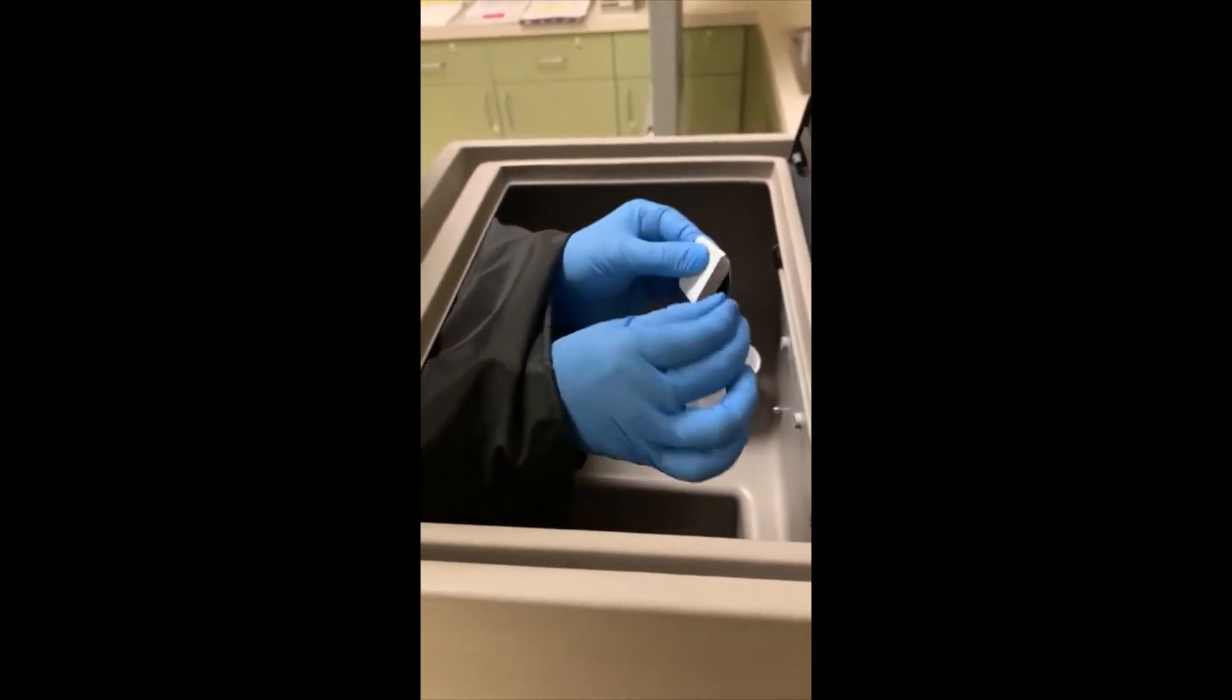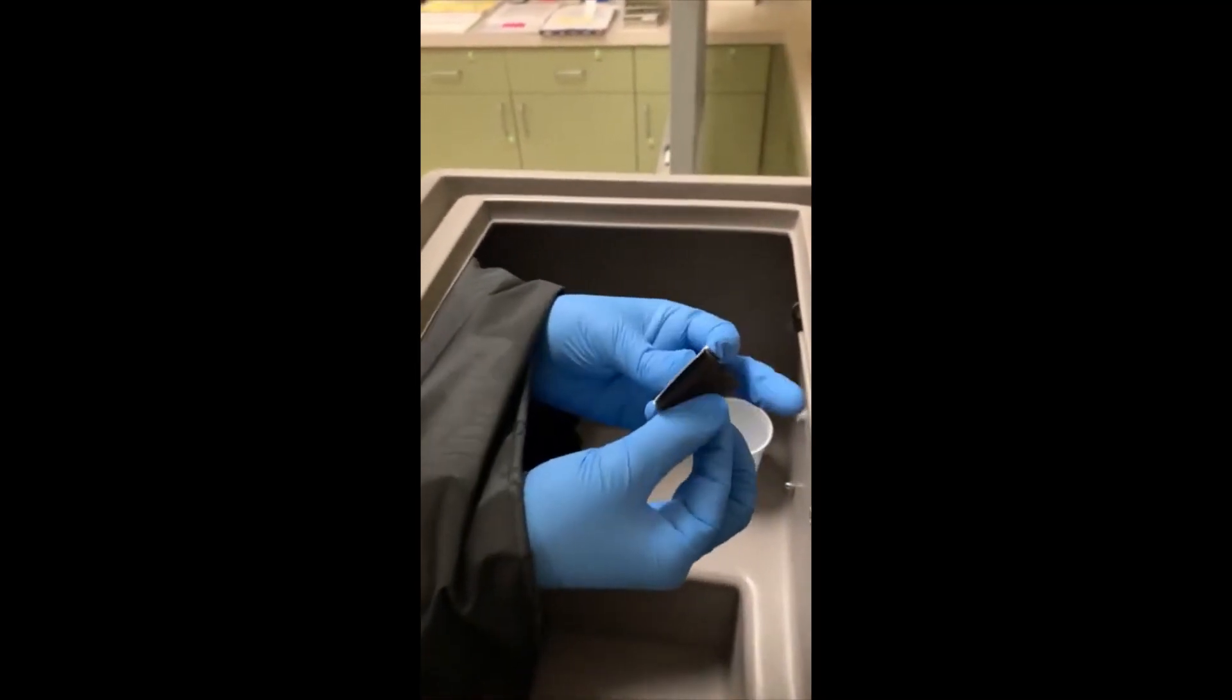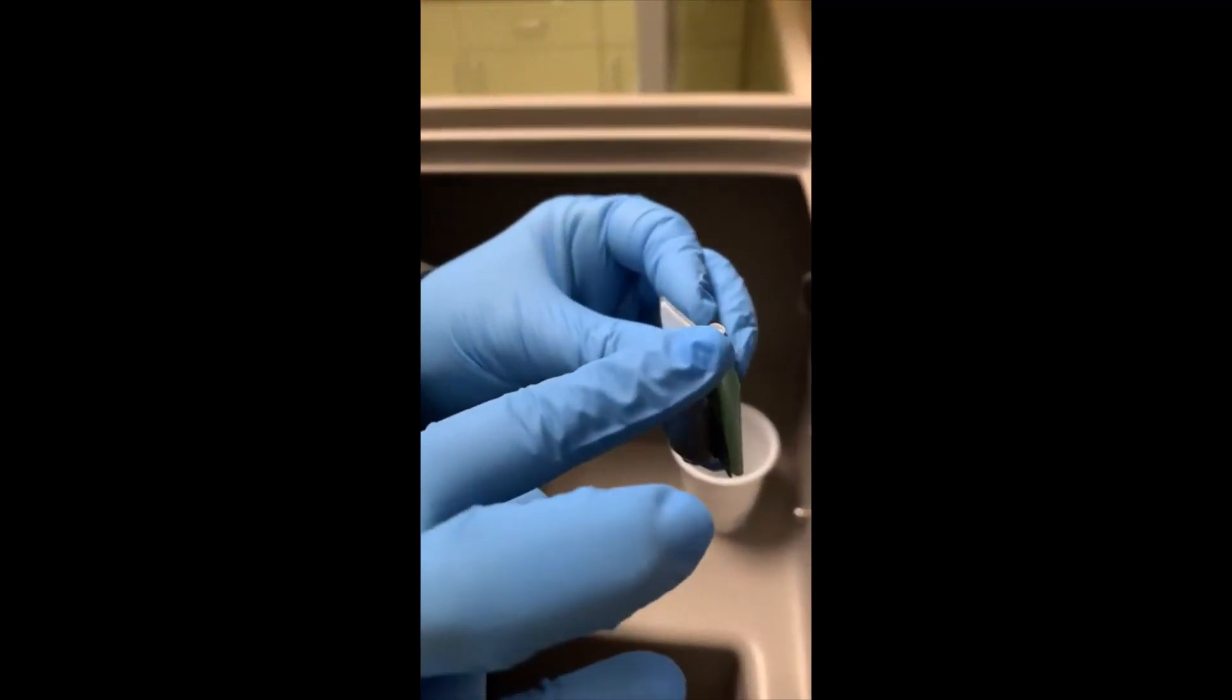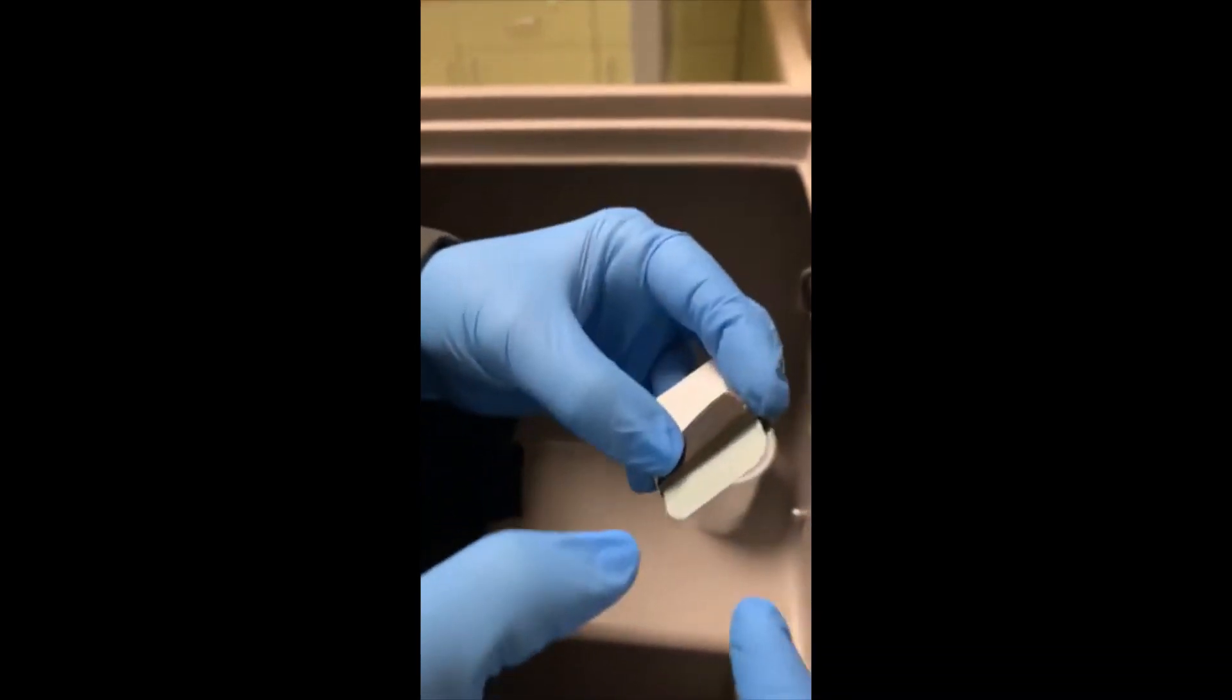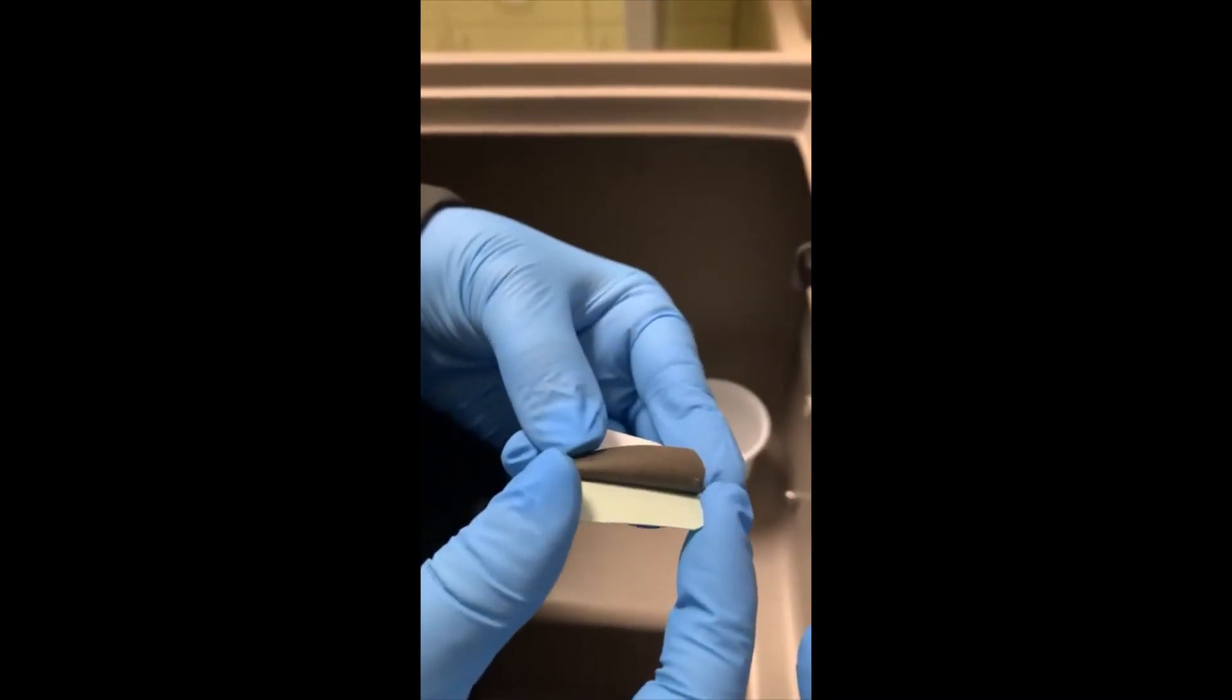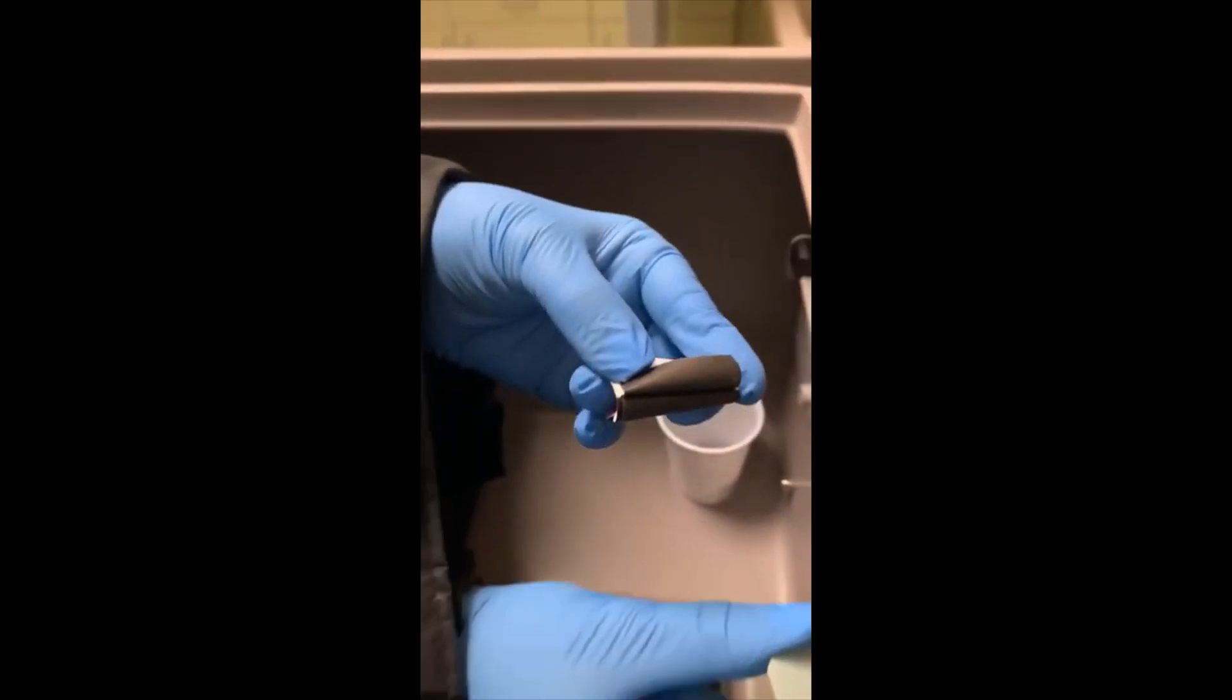This green part right here is the film, so you're going to only touch it from the sides so that you don't put your fingerprints on it and you don't grab it with your nails. You'll only pull it out from the sides, just like this. Then you'll set this little piece of film down on this ledge right here.